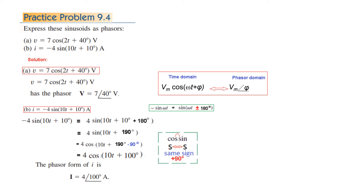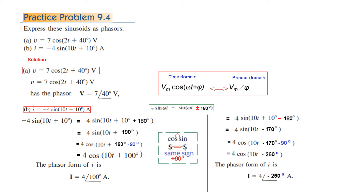You might ask: what if we had taken minus 180° instead? Then minus 180° gives minus 170°. Converting to cosine again, we subtract 90°, giving minus 260°. So the answer would be I = 4 at angle −260°. Now, 100° and −260° appear different, but applying the rule θ + 360° = θ: −260° + 360° = 100°. So minus 260° equals 100° — they are the same answer.